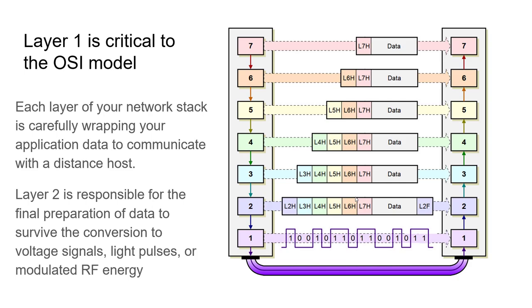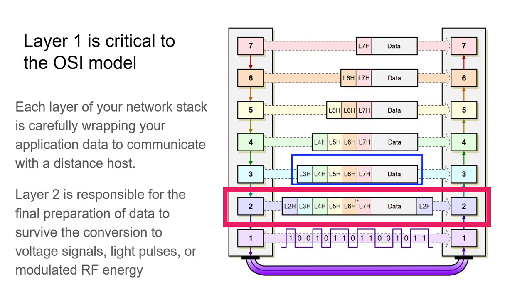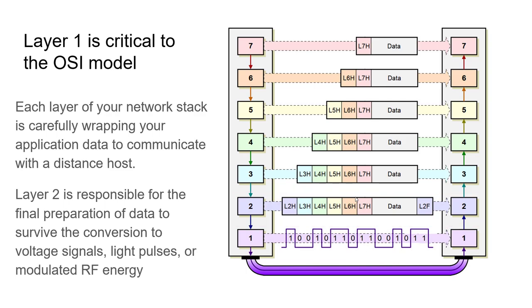Layer 2 is responsible for the final preparation of data to survive the conversion to voltage signals, light pulses, or modulated RF energy.